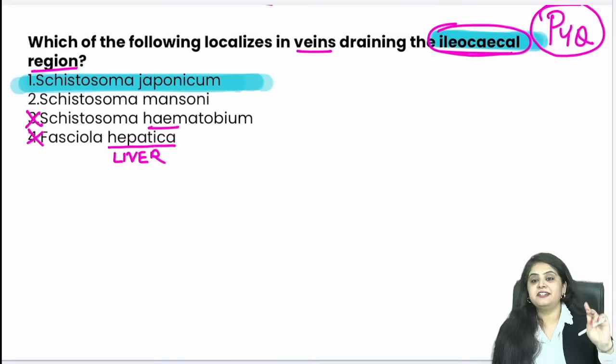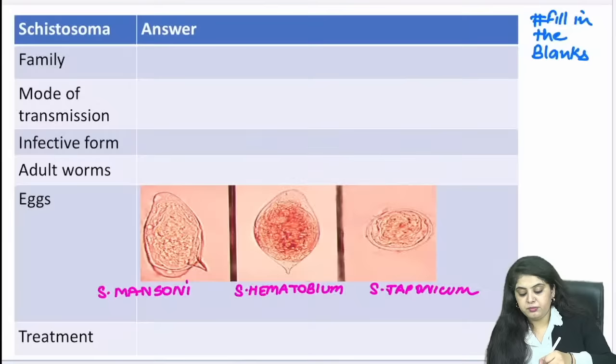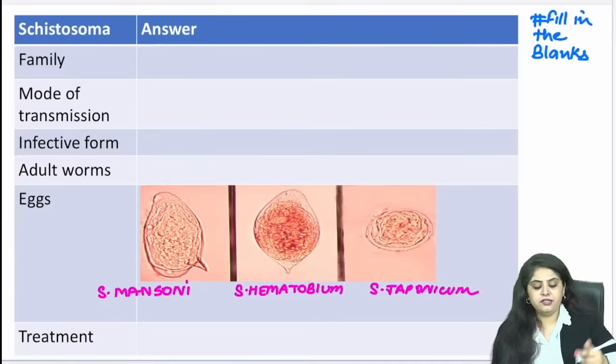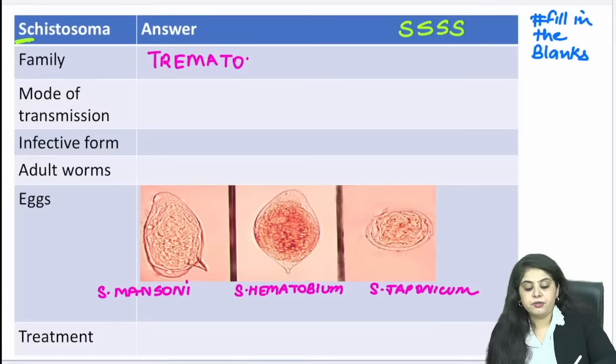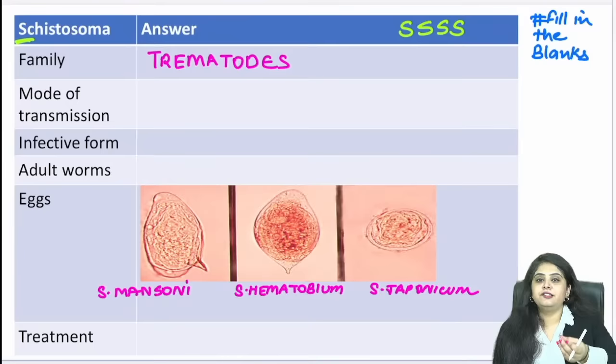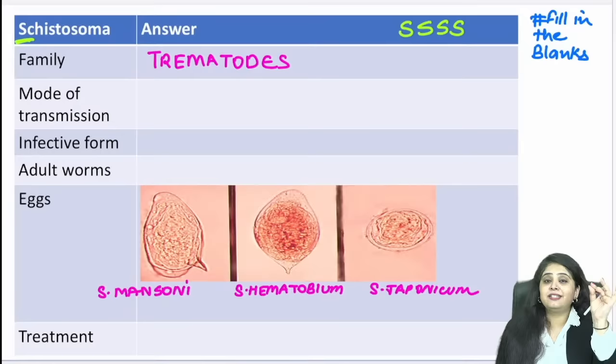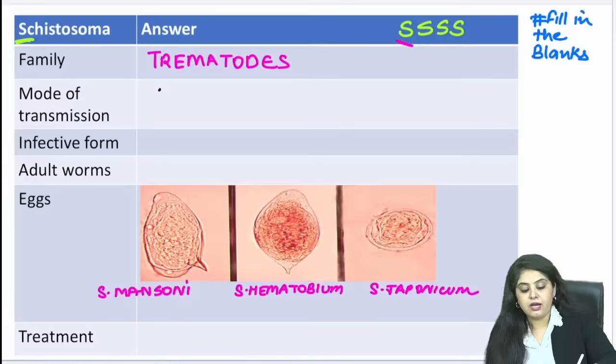The answer is schistosoma japonicum. Now fill in the blanks for schistosoma. They belong to the trematode family. Mode of transmission: skin penetration — not ingestion or inhalation. Schistosoma always follows the S rule. Skin penetration — fill in the blank number one done. Infective form: cercaria larva (not metacercaria). Schistosoma is an exception to the trematode family — other trematodes use metacercaria, but schistosoma uses cercaria larva.